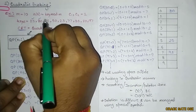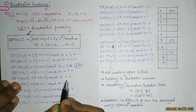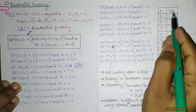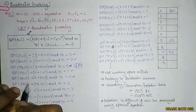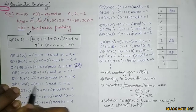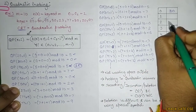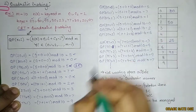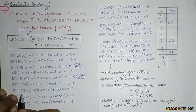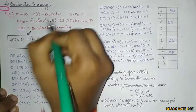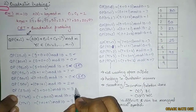For key=50, i=0: 50 mod 10 = 0, but slot 0 already has 80 — collision. Incrementing i to 1 gives slot 2, which is empty, so 50 is stored at slot 2. That is 1 collision for 50. For key=23, i=0: 23 mod 10 = 3, slot 3 is empty — no collision, 23 is placed at slot 3.